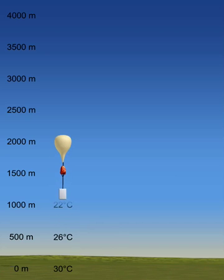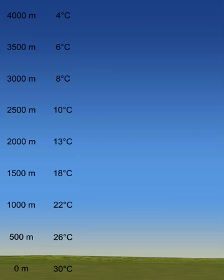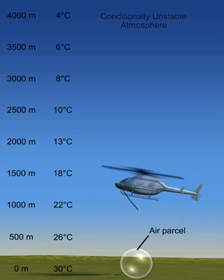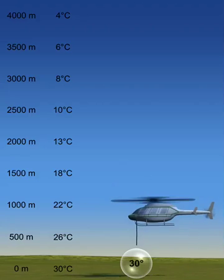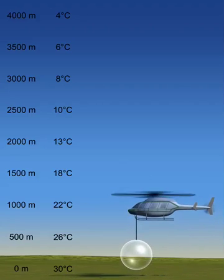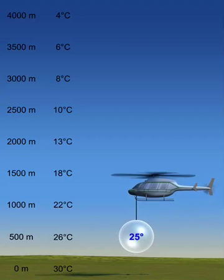A conditionally unstable atmosphere exists when the decrease in air temperature with height falls between the moist and the dry adiabatic rate. A conditionally unstable atmosphere may become unstable if a rising air parcel becomes saturated and a cloud forms.